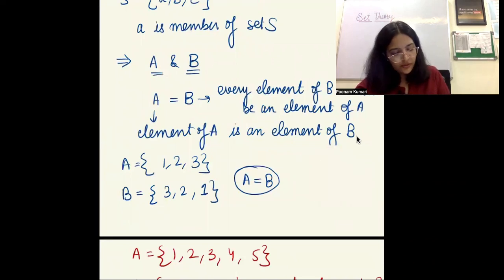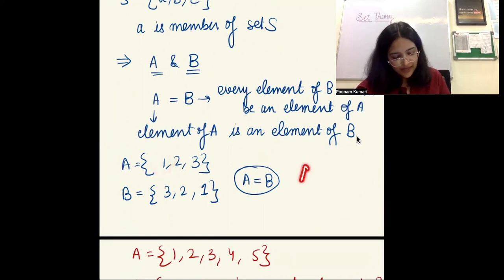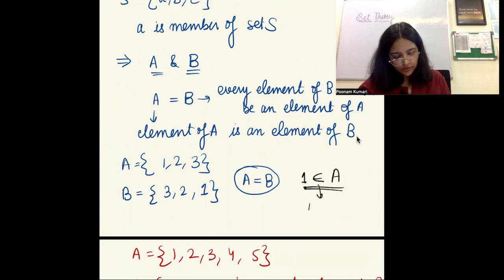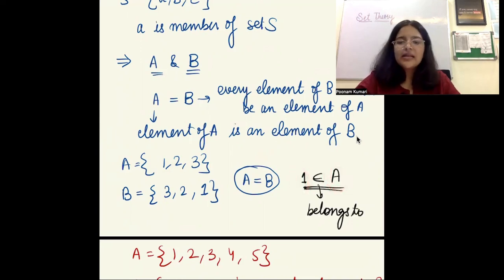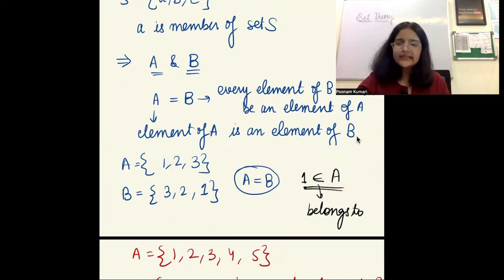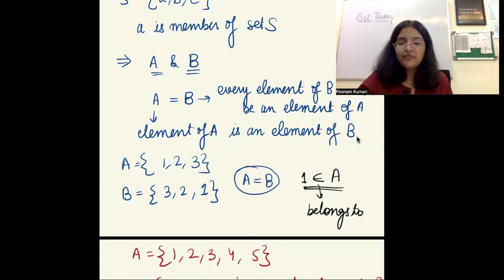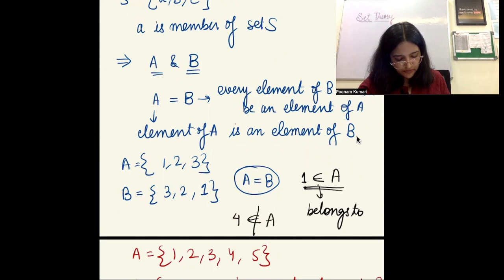Now, if 1 is a member of set A, I write that 1 belongs to set A — this is the symbol for 'belongs to' (∈). If, say, 4 is not a member of A, then I write that 4 does not belong to A, using the 'not belongs to' (∉) sign.